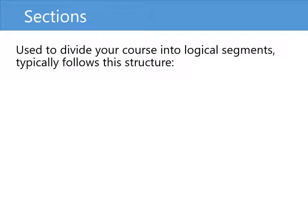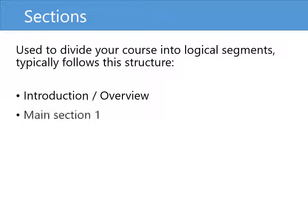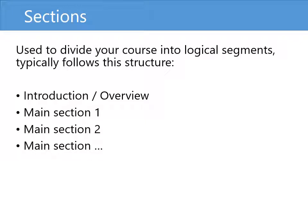When you design your course on our platform, you can separate your course into logical segments, which we call sections. These typically follow this structure: you start out with an introduction or overview section, followed by a main section — or maybe multiple main sections depending on how long or broad your course is — and then you end with a summary section. And as an option, you could also include an appendix section at the very end. It's not required, but it's an option.